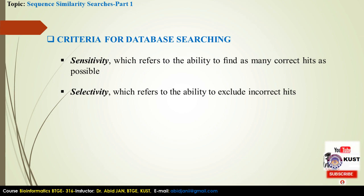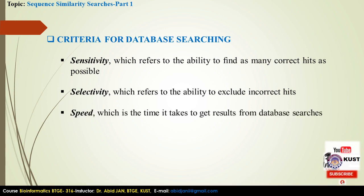The second criterion is selectivity, also called specificity, which refers to the ability to exclude incorrect hits. These incorrect hits are unrelated sequences mistakenly identified in database searching and are considered false positives. The third criterion is speed, which is the time it takes to get results from database searches. The major issues in database searching will be discussed in the last slide.